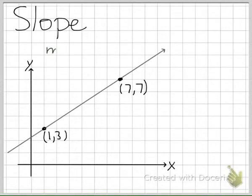When we look at the slope of a line, we define it usually with the variable m to be the change in the vertical distance, so the change in y, to the change in x.